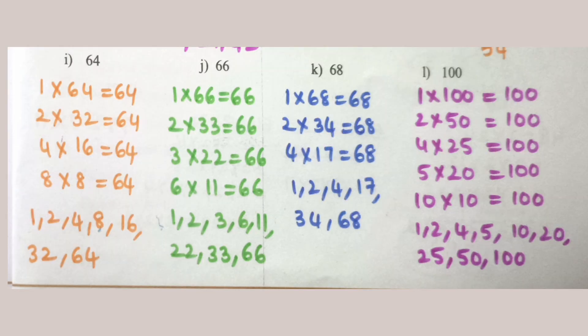64: 1×64=64, 2×32=64, 4×16=64, 8×8=64. So factors of 64 are 1, 2, 4, 8, 16, 32, 64. 66: 1×66=66, 2×33=66, 3×22=66, 6×11=66. So factors of 66 are 1, 2, 3, 6, 11, 22, 33, 66.